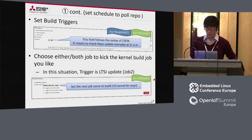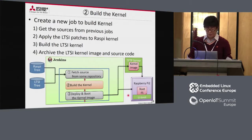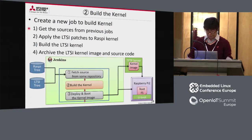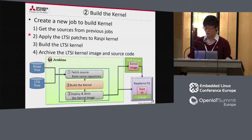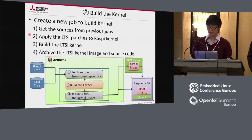The first step is completed when the job runs. The source code will be checked and fetched automatically if it is updated. The next step is to build the kernel. I'll show a detailed procedure for the second step. First, get the source fetched in the previous step. Next, apply the LTSI patch to the Raspberry Pi kernel. Third, build the LTSI kernel for Raspberry Pi 2. Finally, archive the kernel image and kernel source code for the next job. I'll explain how to create a Jenkins job for this procedure.